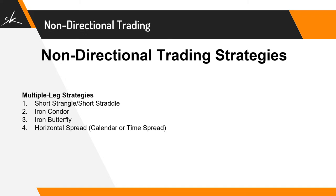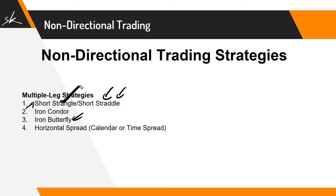In the non-directional strategies, we have already covered short strangle. Today we will be doing short straddle. As we move forward, we'll be getting into iron condor and butterflies. The iron condor is just a modified version of the short strangle, and the iron butterfly would be a modified version of a short straddle — these are basically modified versions of short strangle and short straddle. We'll also be covering horizontal spread as we move ahead.